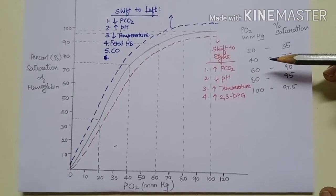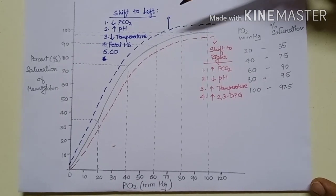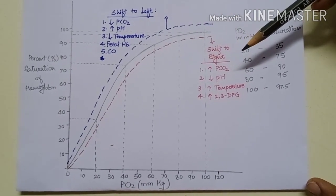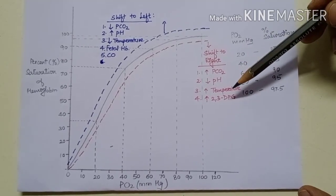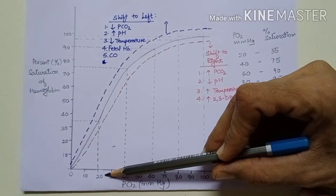We discuss the shift of the curve to right and left. Shift of the curve to right means decreased affinity of hemoglobin for oxygen. For example, as we have discussed, at 20 mmHg PO2, percentage saturation of the normal curve is 35%.